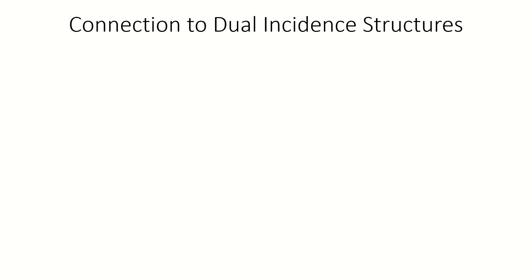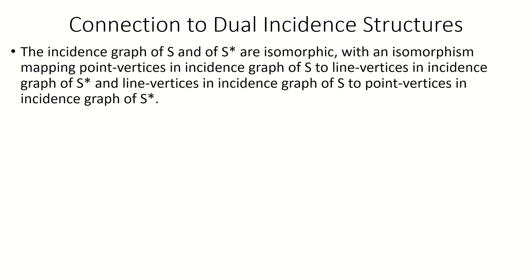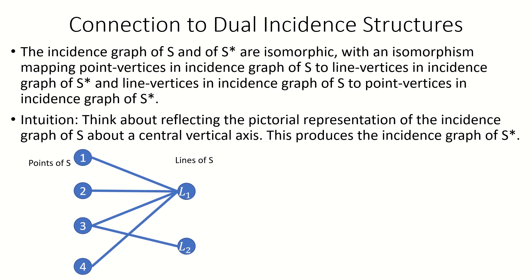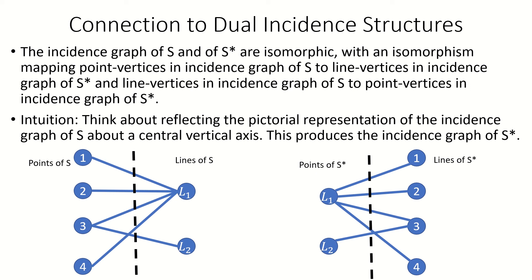Moving on, incidence graphs also have an interesting connection to dual incidence structures. The incidence graph of an incidence structure S is isomorphic to the incidence graph of the dual of S, S-star, with the isomorphism mapping all vertices in the incidence graph of S that represent points to all vertices in the incidence graph of S-star that represent lines in S-star, and vice versa. Intuitively, if we reflect the pictorial representation of an incidence graph — with point vertices on the left and line vertices on the right — about a central vertical axis, we get the pictorial representation of the dual structure's incidence graph. This reflection does not change the structure of the graph, so the two incidence graphs are isomorphic.